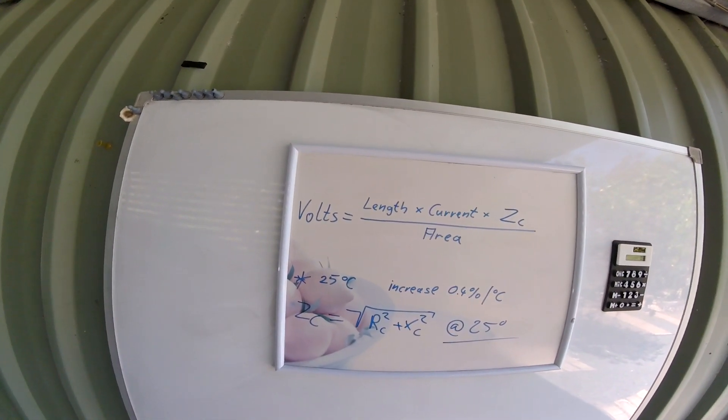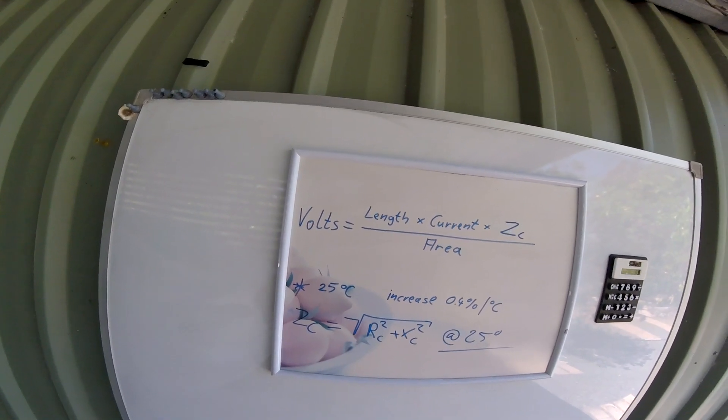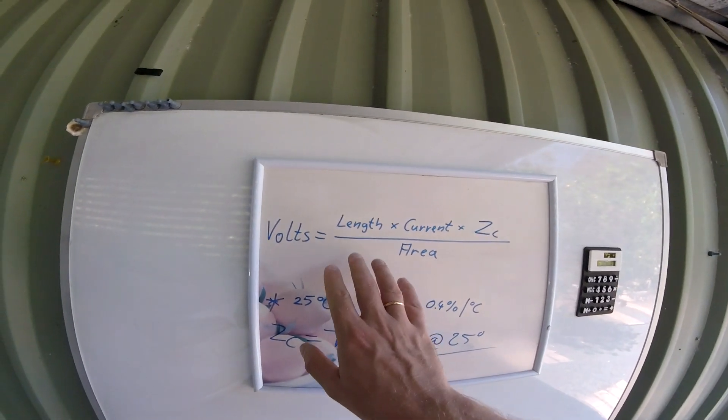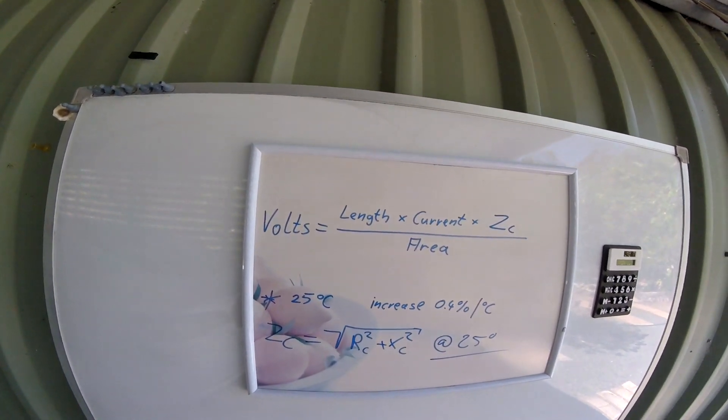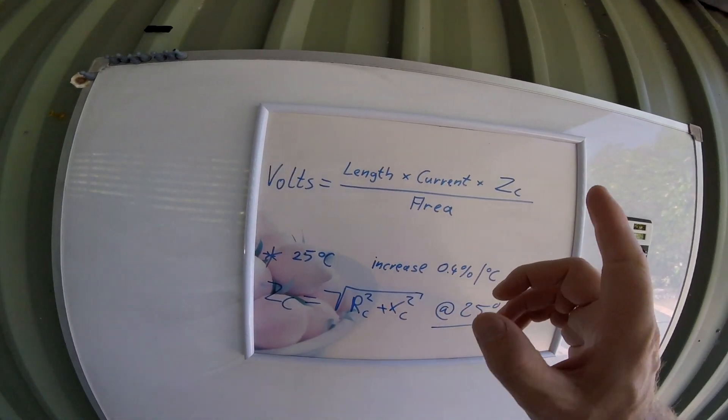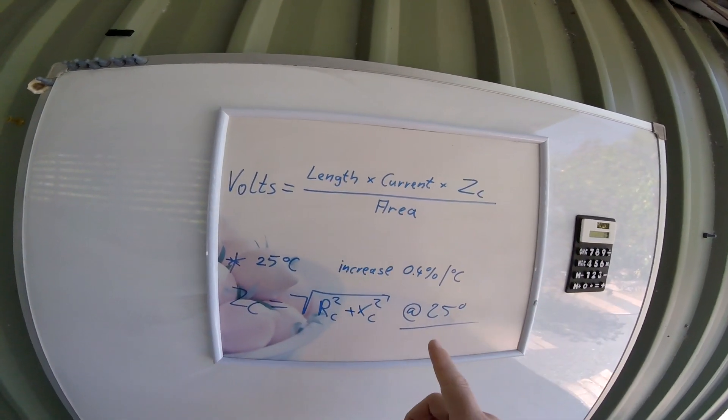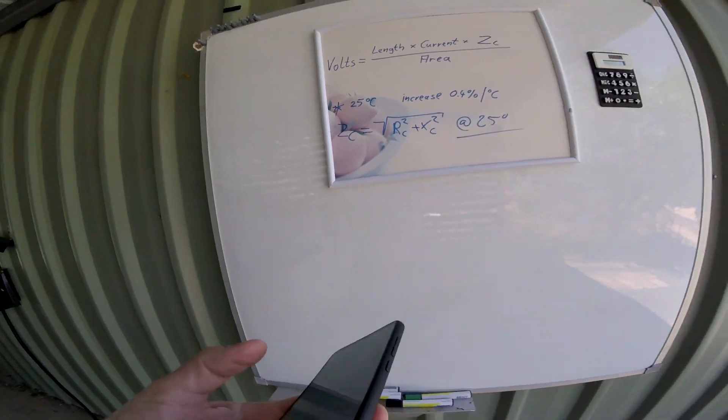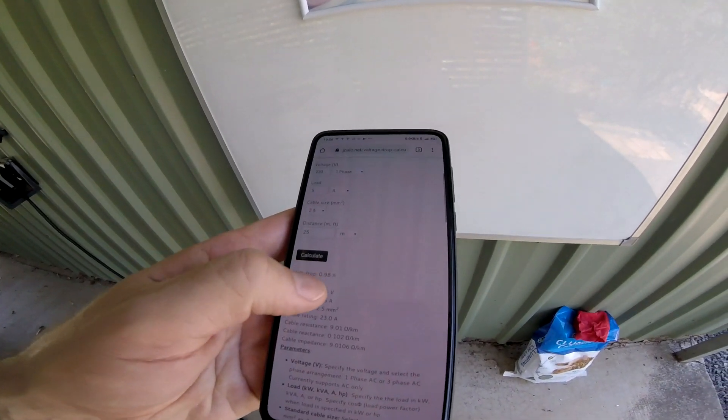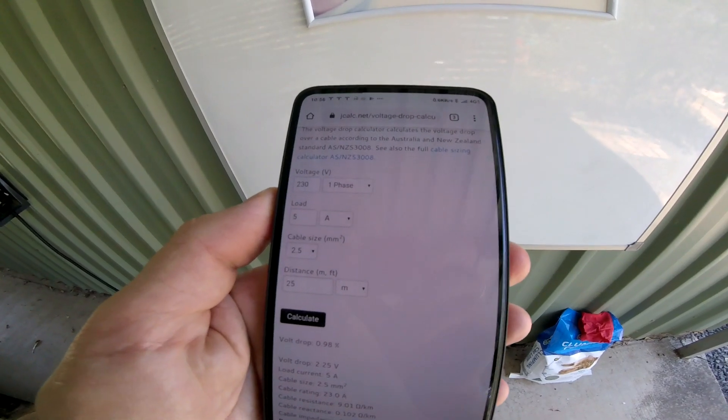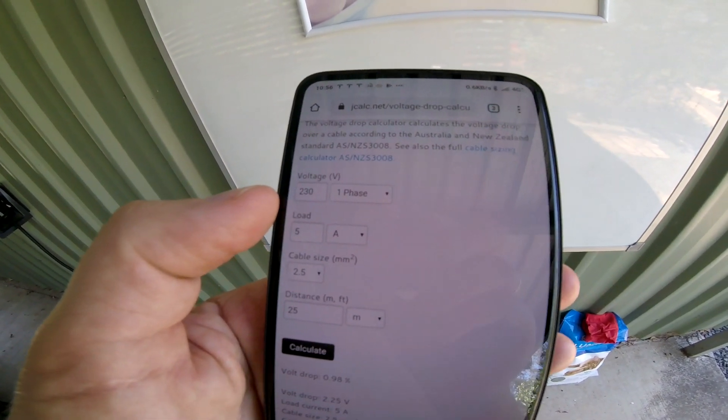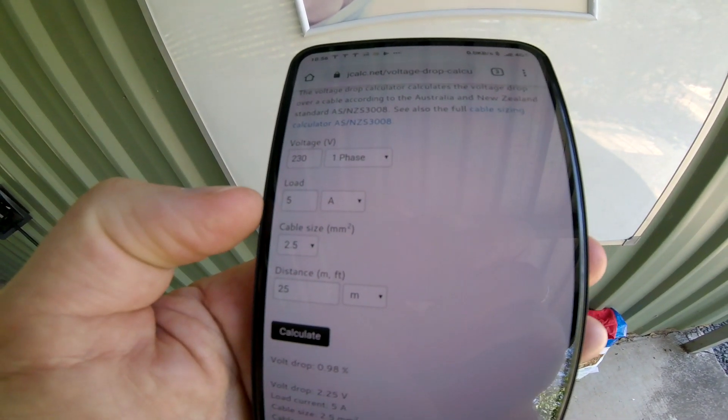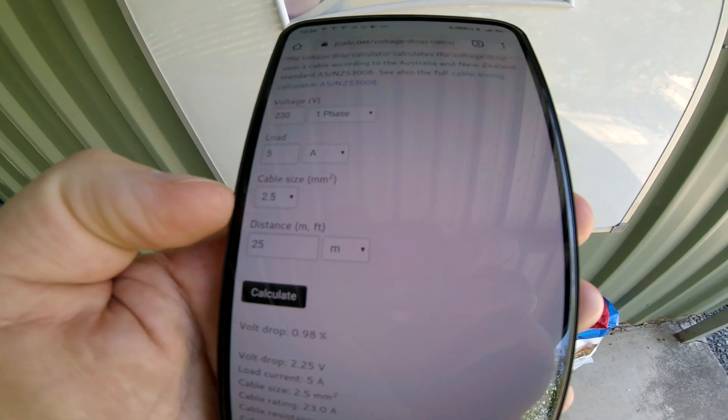I'm just looking up some formulas on the internet on how to calculate the voltage drop on the cable while connected to AC. We found this simplified method here and it is dependent on the load you've got on there and what kind of power factor you have. The easiest way is if you go online and find an online calculator like this one here. See, it has 230 volt, one phase, 5 ampere load, 2.5 cable size, and a distance of 25 meters.